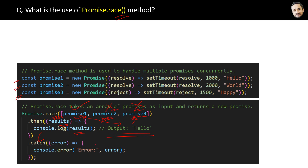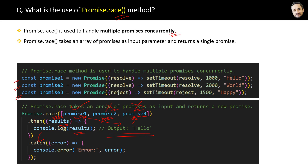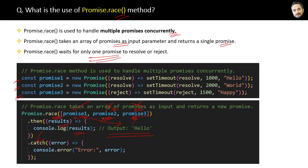To summarize the key points about Promise.race: first, it is used to handle multiple promises concurrently. Second, Promise.race takes an array of promises as an input parameter and returns a single promise. Third, Promise.race waits for only one promise to resolve or reject. Now you know the answer.